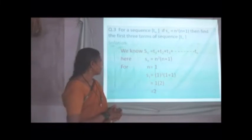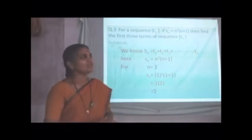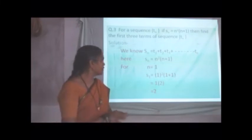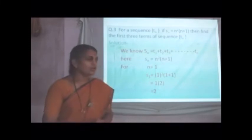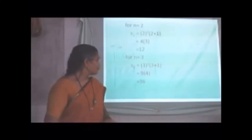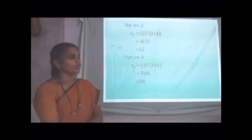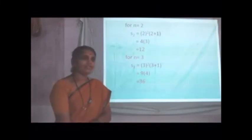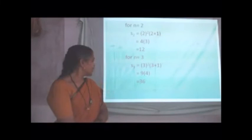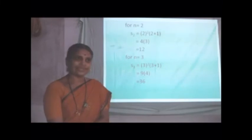So, from formula Sn is equal to T1 plus T2 plus T3 up to Tn. Here Sn is given n square in bracket n plus 1. So, for substitute n is equal to 1, we get S1 is equal to 1 square into 1 plus 1. That is 1 into 2 is equal to 2. For n is equal to 2, we get S2 is equal to 2 square in bracket 2 plus 1. That is 4 into 3 and it is equal to 12. For n is equal to 3, we get S3 as 3 square in bracket 3 plus 1. That is 9 into 4. That is 36.